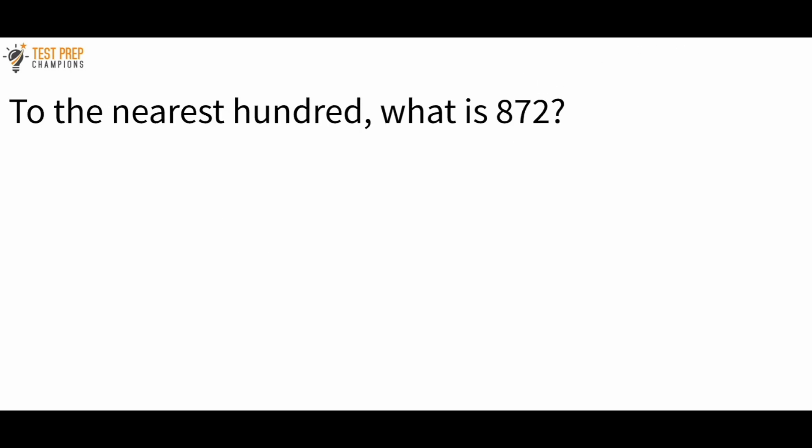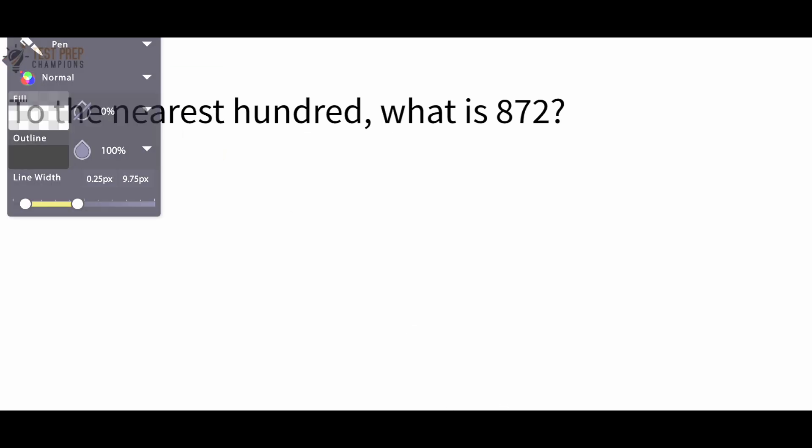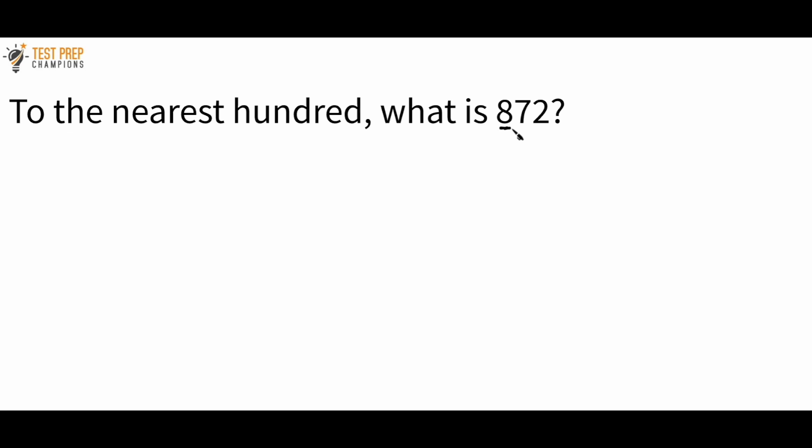The next example says: to the nearest 100, what is 872? Pause the video to try to figure this out. The first step is to identify the number in the hundreds place — in this case, 8 is in the hundreds place. Look to the number directly to the right of it and ask: is it less than 5 or 5 or greater? Here we have a 7, so we're going to round up.